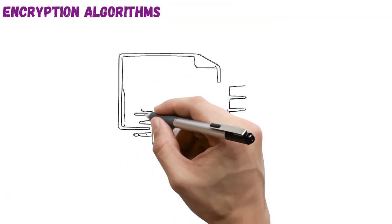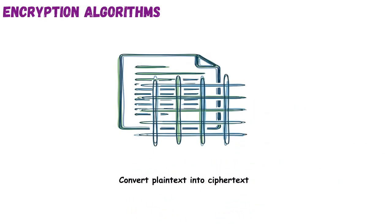Encryption algorithms. This topic covers the mathematical rules used to scramble data into unreadable ciphertext and reverse it when needed. It's like putting a letter in a coded language — only someone who knows the pattern can decode it. These algorithms are critical in protecting data both in transit and at rest. They're categorized as symmetric, like AES, and asymmetric, like RSA, each with unique use cases.